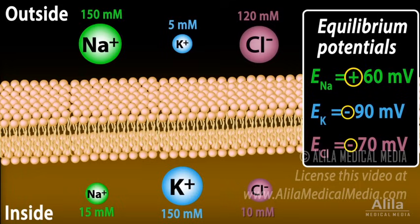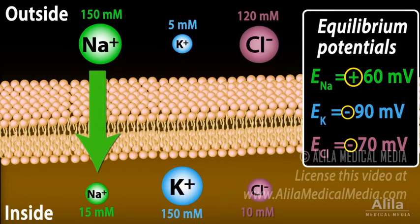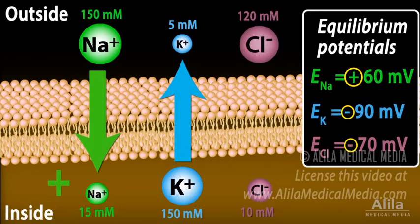Because sodium gradient is directed into the cell, its equilibrium potential must be positive to drive sodium out. Potassium has the reverse concentration gradient, hence negative equilibrium potential.